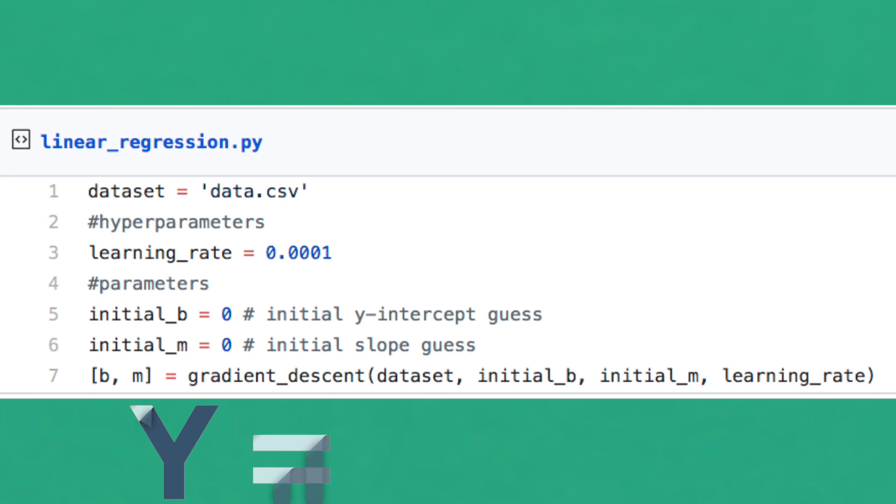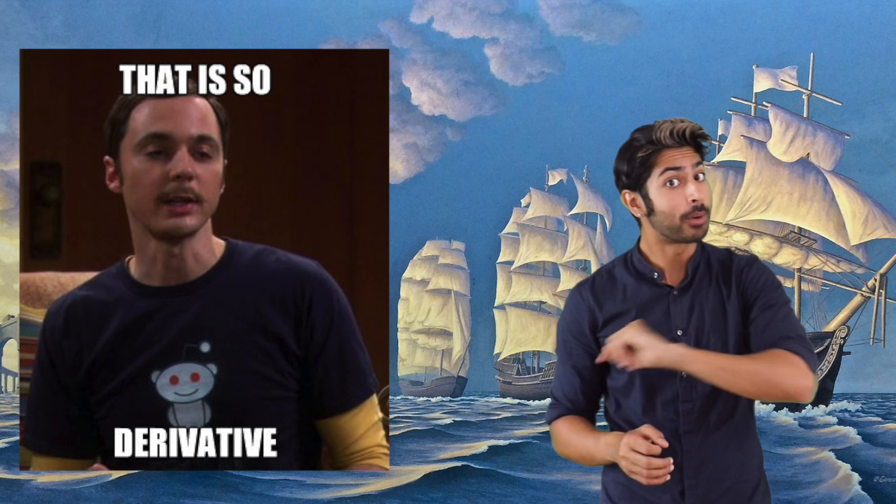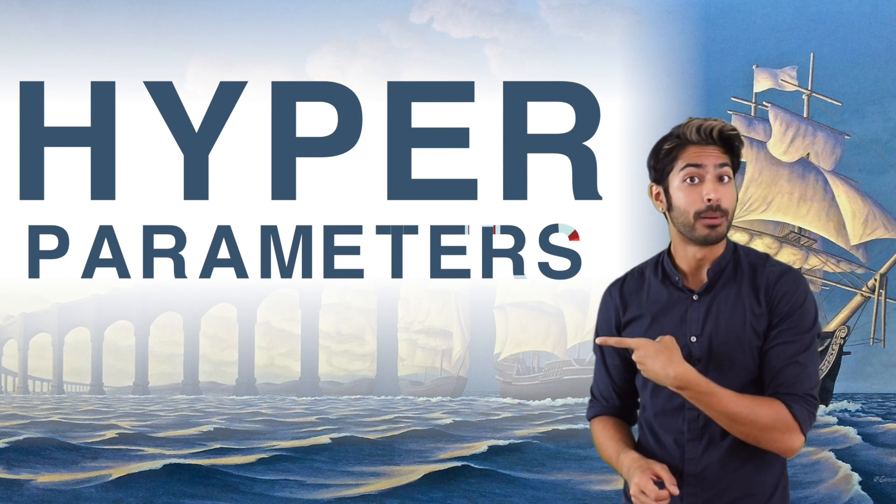They are the model values that are set before you train on any data set. An ML model is just a formula with the number of parameters that need to be learned from data. But there are also parameters that can't be directly learned from the regular training process and we call these higher-level properties hyperparameters.